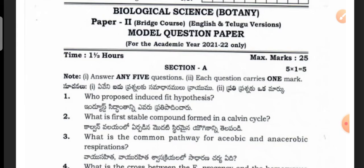Today I would like to show the model question paper for the academic year 2022 students, for the BridgeCo second year students who are going to write the inter-vocational examination in the BIP system. This is the biological sciences paper — botany and zoology model question papers for the academic year 2021-2022.